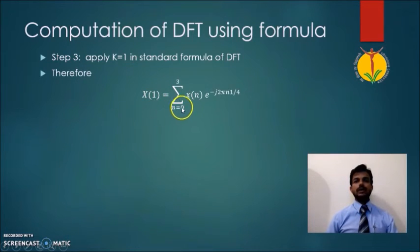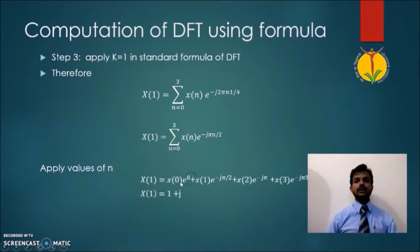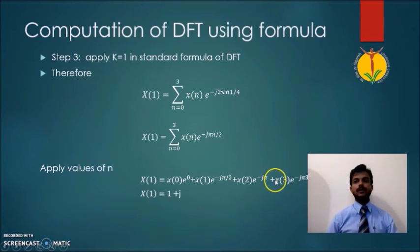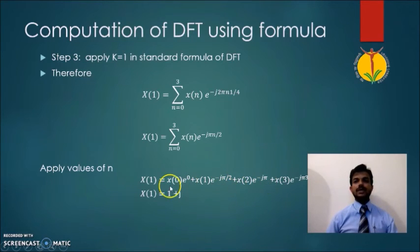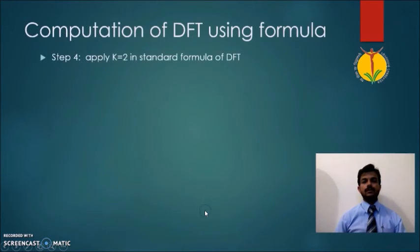For k=1: X(1) = summation from n=0 to 3 of X(n) e^(-j2πn·1/4). After simplification, this expands to X(0)·e^0 + X(1)·e^(-jπ/2) + X(2)·e^(-jπ) + X(3)·e^(-j3π/2). Substituting the sequence values X(0)=1, X(1)=0, X(2)=0, X(3)=1, we compute X(1).